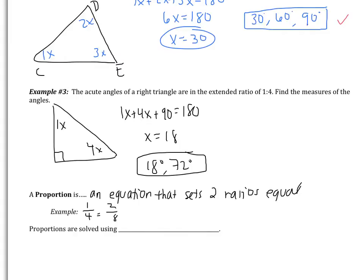Proportions are solved using the cross-products property. So in the past, your teachers have probably called this cross-multiplying. The real term is cross-products property. From this point forward, I'm going to expect that you use the term cross-products property instead of cross-multiplying.